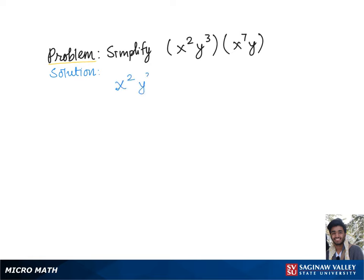To simplify x squared y cubed multiplied by x to the seventh times y, we'll first rearrange the terms such that the exponents with the common base x are together and the exponents with the y base are together.